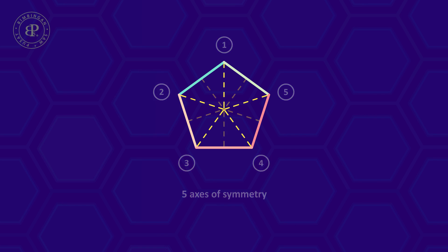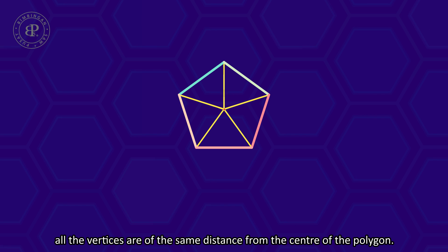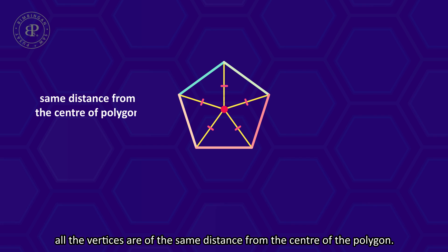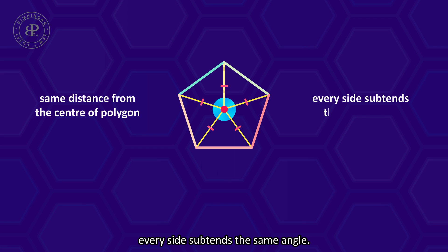For a regular polygon, all the vertices are at the same distance from the center of the polygon. As a matter of fact, every side subtends the same angle.